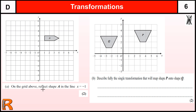The first one is a reflection of a shape in the line x equals minus 1. Now this will cause some people difficulty - knowing where the line x equals minus 1 is. You shouldn't let that stop you from having a go. If you reflect the shape in a vertical line, getting a shape over here, or a horizontal line, you will get one mark, so long as you do a vertical or horizontal and not a diagonal.